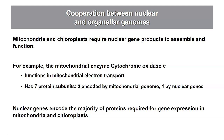However, not all of the proteins involved in those processes are encoded in the organelle genome. They also have to import proteins encoded in the nucleus of the cell in order to carry out the complete function. One example is in mitochondria: there's an enzyme called cytochrome oxidase C, which has seven protein subunits — three encoded by mitochondrial genes and four by nuclear genes. Those four nuclear-encoded subunits are made in the cytoplasm and imported into the mitochondria.